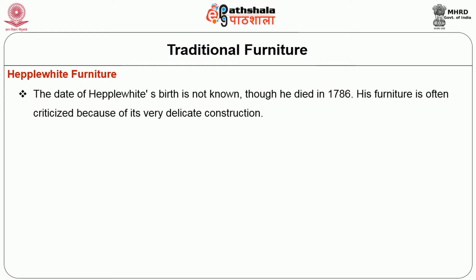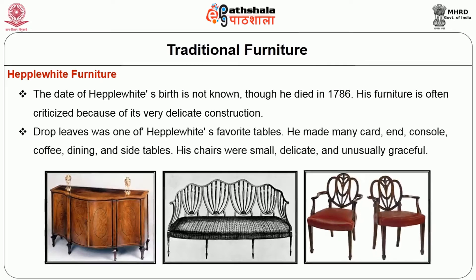Heppelwhite Furniture: The date of Heppelwhite's birth is not known, though he died in 1786. His furniture is often criticized because of its very delicate construction. The drop leaf was one of Heppelwhite's favourite tables; he made many card, end, console, coffee, dining, and side tables. His chairs were small, delicate, and unusually graceful. The most familiar backs were the shield and the camel back. Within the backs he designed urns, Prince of Wales plumes, and whittles. Other backs included oval and interlacing heart, and the wheel. The legs were always straight, slender, and tapering, and were either square or round. The chairs often had upholstered seats, and the sofas and settees had backs that repeated the chair backs.